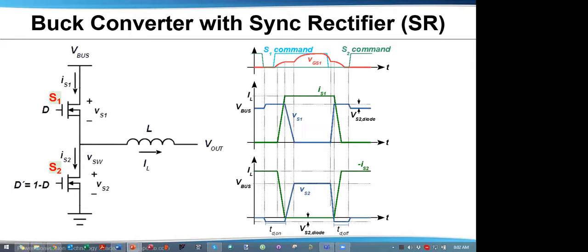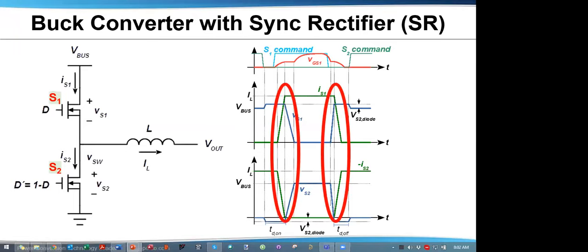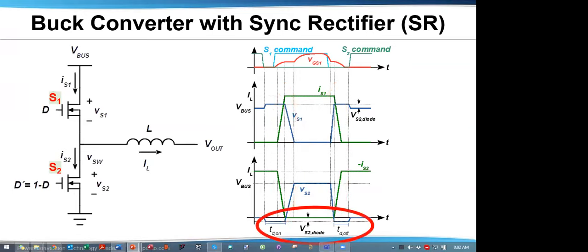Let's look at the operation of a buck converter with a synchronous rectifier. S1 is on the high side, and the synchronous rectifier S2 is on the low side. S1 is on with a duty cycle, feeding an inductor that pulls a constant average current. This is what we normally consider transition losses, or switching losses. However, we're also going to be talking about the dead time losses in the body diode, when the body diode conducts.